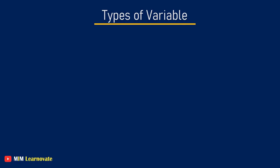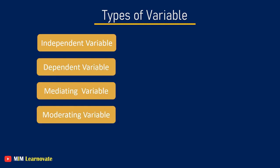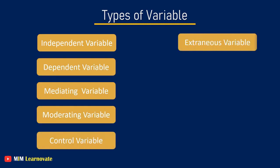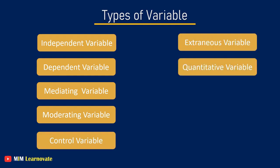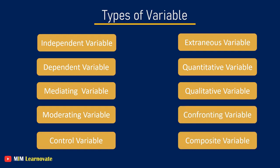Types of variable. Researchers organize variables into a variety of categories, the most common of which include Independent variable, Dependent variable, Mediating variable, Moderating variable, Control variable, Extraneous variable, Quantitative variable, Qualitative variable, Confounding variable and Composite variable. Let's study them in detail.